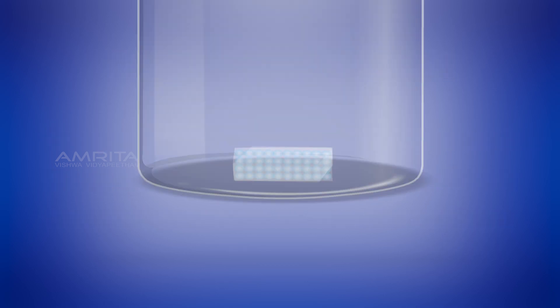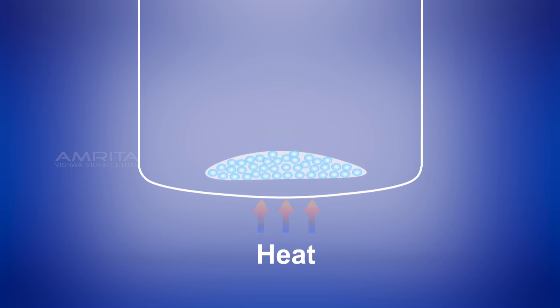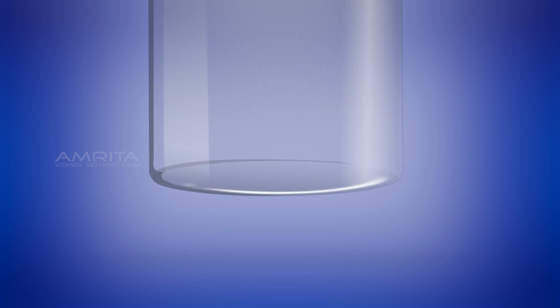On heating a solid, its molecules absorb energy in the form of heat. As a result, the force of attraction between the molecules decreases and the molecules become increasingly separated. At a particular temperature, called the melting point of the solid, the separation of the molecules increases by a large amount and the solid melts and is converted into liquid.